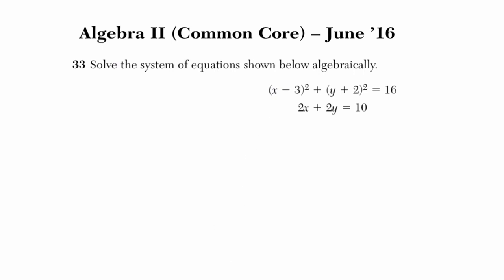With the system, for me at least, I find that when I have a system where I have something that's not linear and something that's linear, I'm going to use substitution. And this right here is just a circle. X minus something squared, Y plus something squared equals 16. That's going to be a circle, and then here we have two things, X and Y, and the exponents are just one. That's going to be a linear thing. It's a line.